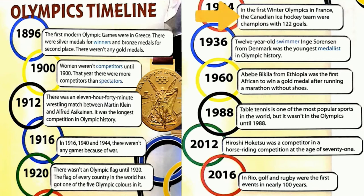1924. In the first Winter Olympics in France, the Canadian ice hockey team were champions with 122 goals.